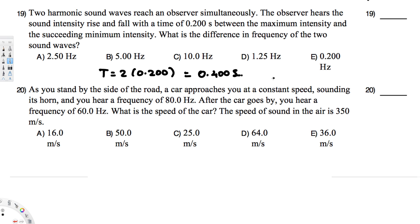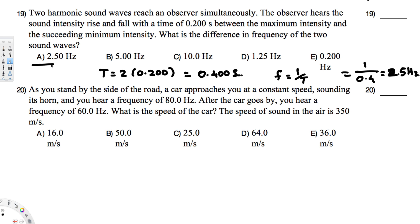We know that frequency is one over T, so we simply divide: f = 1 over 0.4. If you calculate this, you get 2.5 hertz. So the answer is 2.5 hertz.